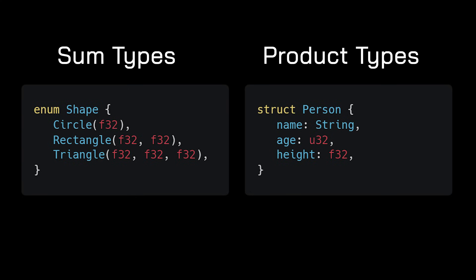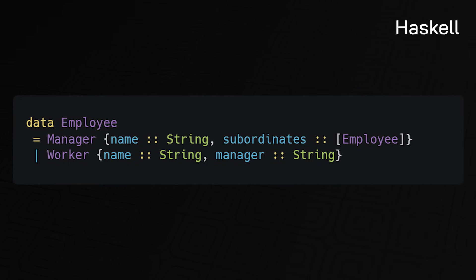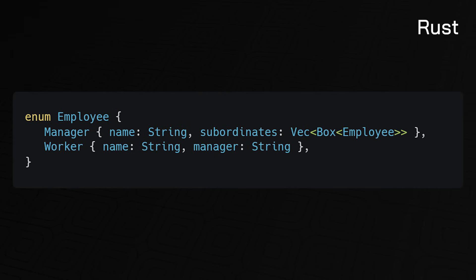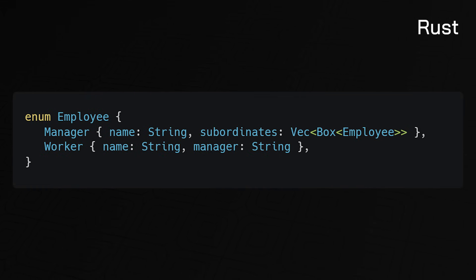In Haskell, an employee data type is a sum type with two variants: manager and worker, each holding different types of data. In Rust, ADTs are implemented through enums and structs — enums are sum types, structs are product types. While the concept is similar between Rust and Haskell, Rust integrates ADTs into an imperative programming style and combines them with pattern matching, lifetimes, and the borrow checker to ensure memory safety and data race prevention.